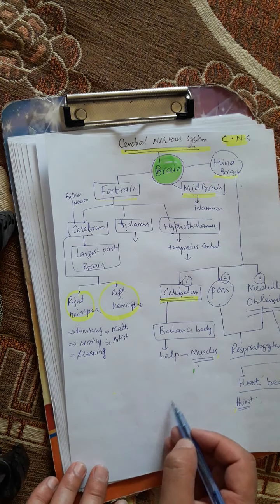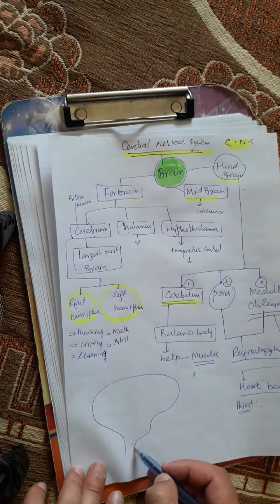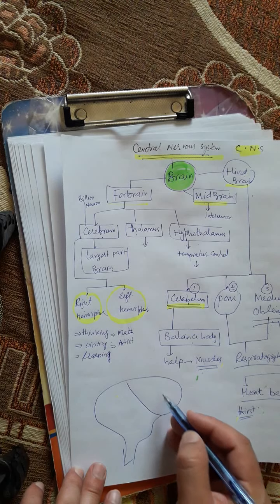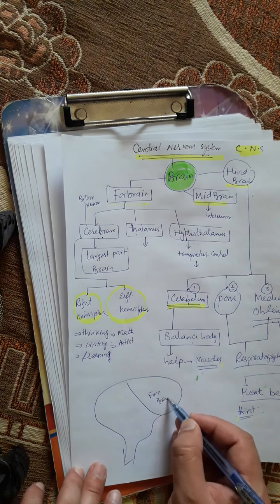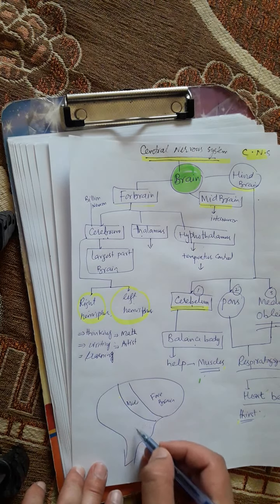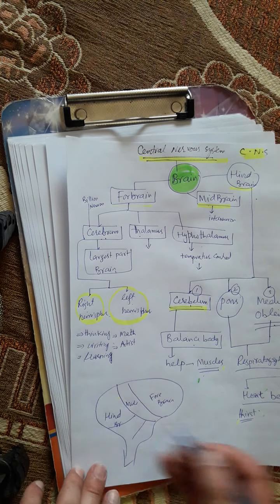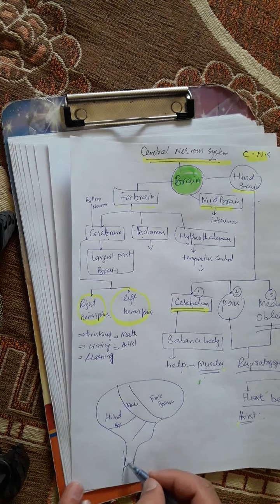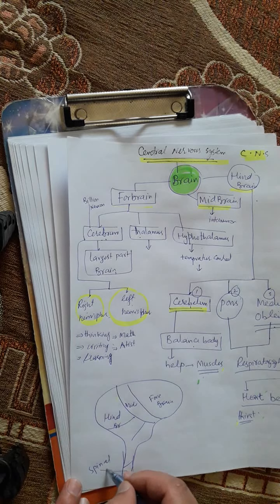That is the structure of the brain. Here we can see in the diagram: the forebrain is at the front, then the midbrain is in the middle, and the hindbrain is at the back. After the forebrain comes the spinal cord.